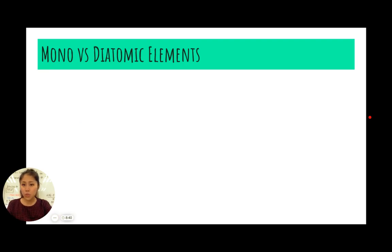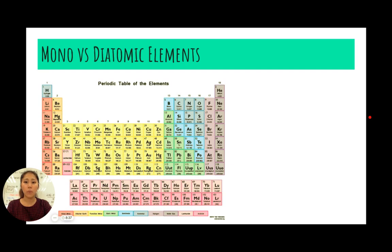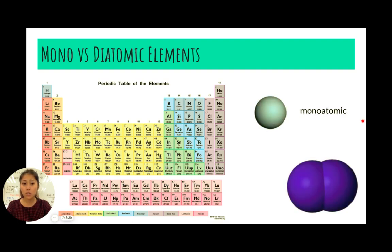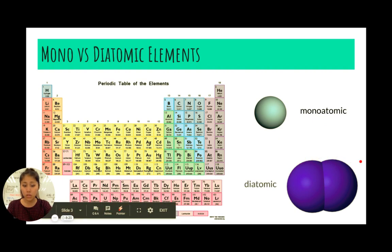However, there are certain elements that occur as diatomic elements. This means that on the periodic table, all these atoms usually occur as monoatomic. Monoatomic means that they occur as one atom. There are a few exceptions. There are seven elements that like to occur more so in pairs. That's because they're just more stable that way.